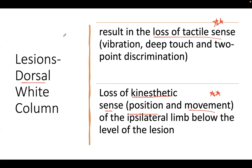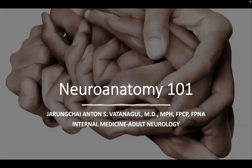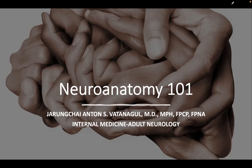This basically ends our session on Neuroanatomy 101. We covered the descending pathways in another module — the corticospinal and corticobulbar tracts, which are the motor pathways. We just finished the ascending pathway, the most important ascending pathway, which is the posterior column medial lemniscus pathway, carrying sensory information.